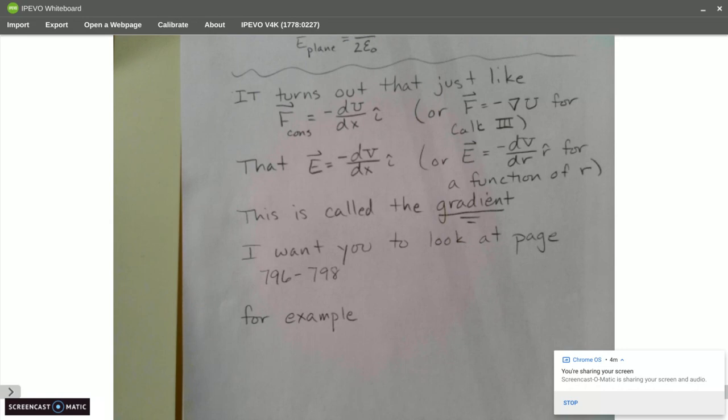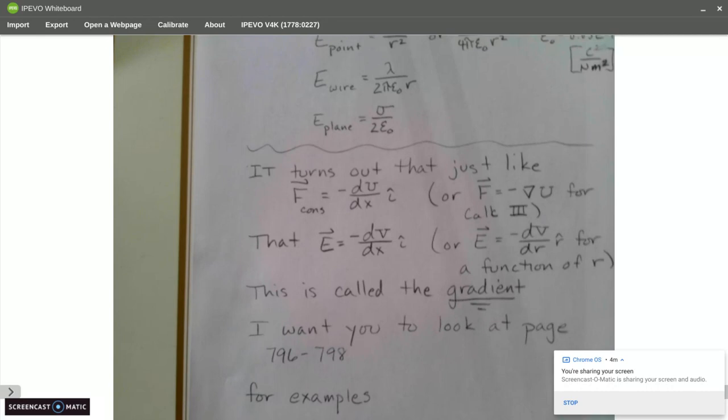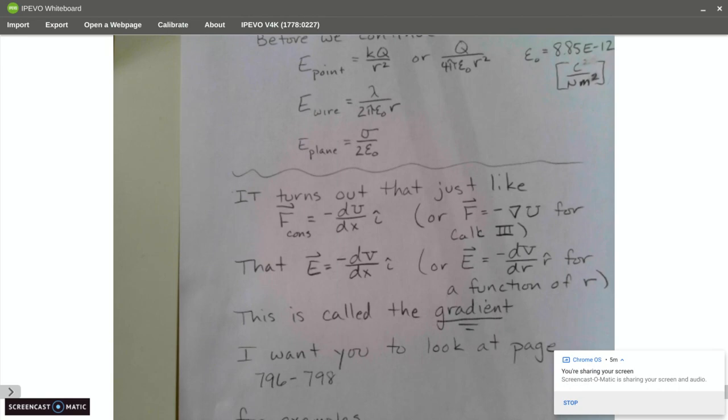The electric field, when it is done this way, is called a gradient. And I want you guys to take a look at page 796 to 798 for some examples. That's all we need. Right now, as a quick review, we are going to use the electric field of a point for any and all of today's equations.